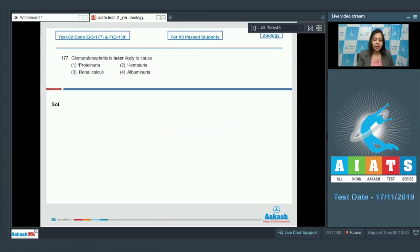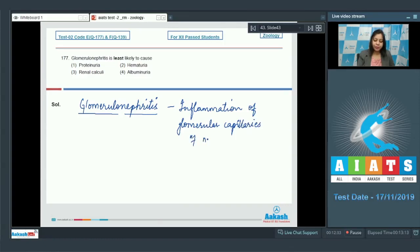Question number 177: Glomerulonephritis is least likely to cause... Glomerulonephritis is the inflammation of glomerular capillaries of the nephron.